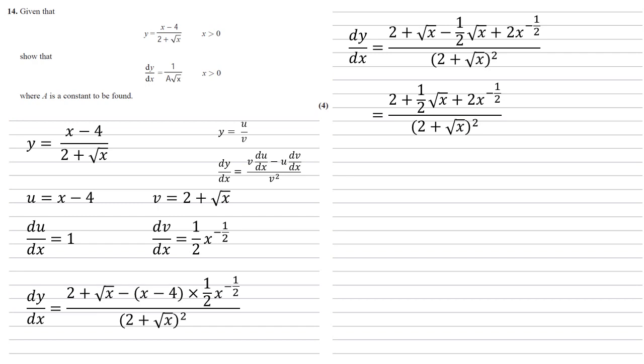On the top we've got a negative power there at the end, and we've got a fraction in our middle term, so let's get rid of those by multiplying top and bottom by 2 root x. This gives us 4 root x, the second term, the 2 and the half cancel out, the root x is multiplied together just to leave the x, plus 4 at the end, and now on the bottom we've got 2 root x times by our 2 plus root x all squared.